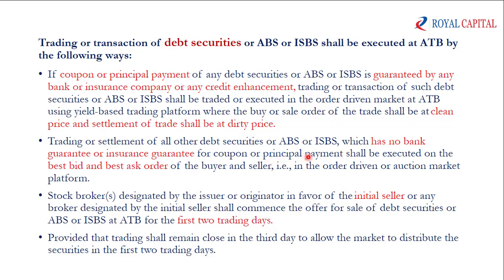Coupon or principal payment settlement is executed at the best bid or best ask order. Here, the clean price is the present value of the debt securities. And the dirty price is the clean price plus the accrued interest for the holding period that the investor holds the debt securities, which accrues as profit during that holding period.